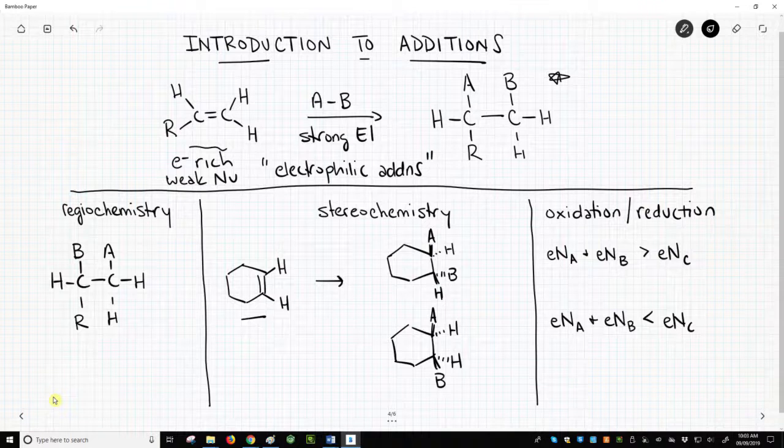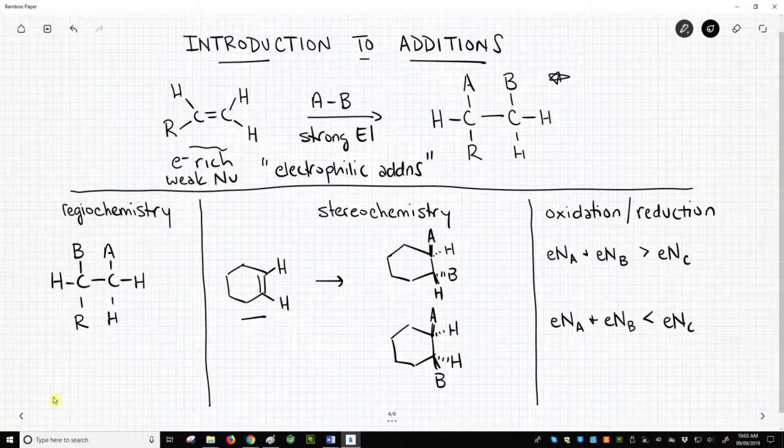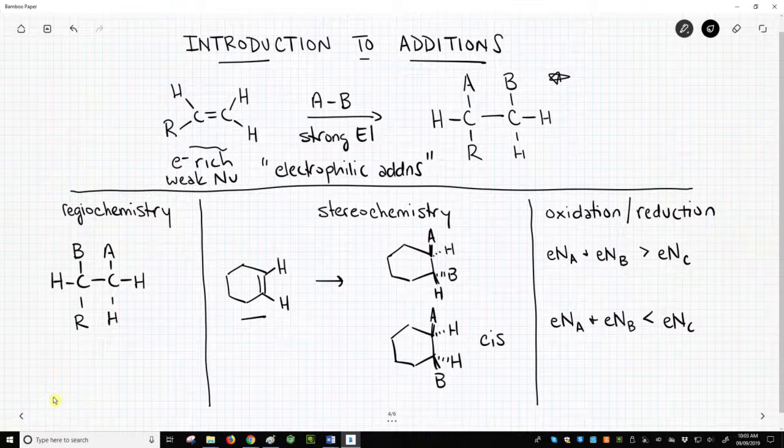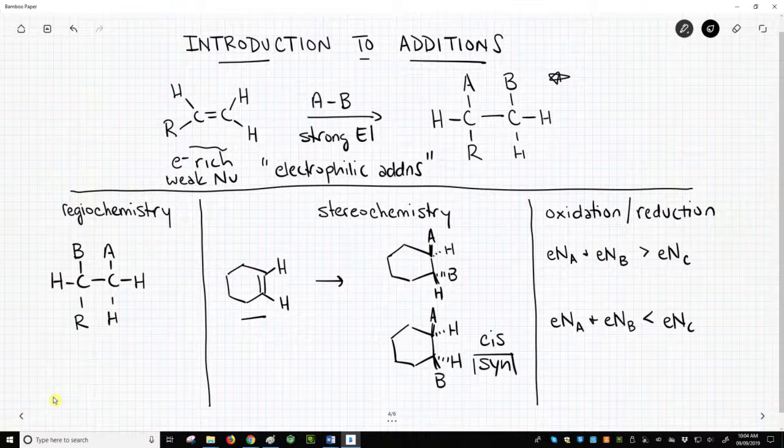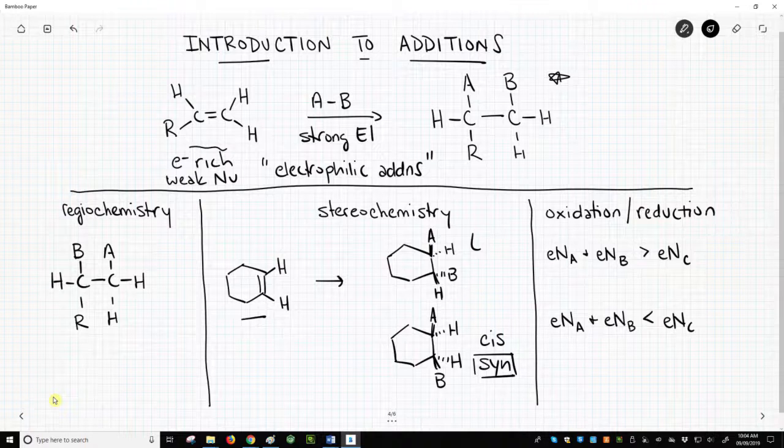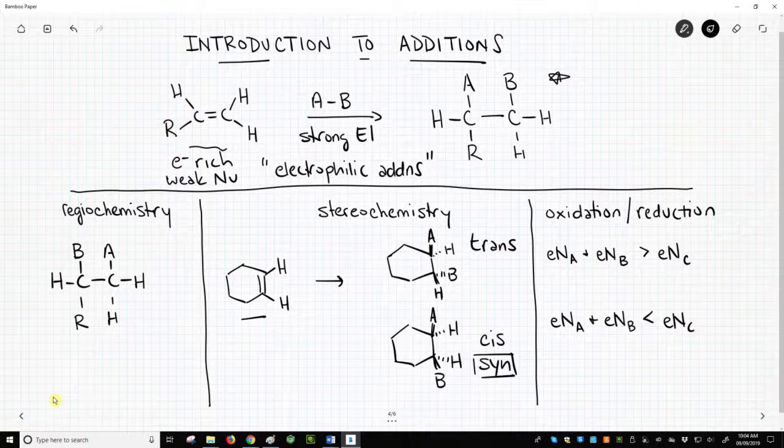Notice that the addition reaction created two new stereocenters. In one product, the AB groups are on the same side of the ring – it's the lower compound in a cis relationship. This is the syn addition product. In the other product, the A and B groups are trans. One is up, one is down. This is the anti-addition product.